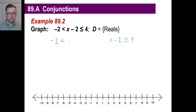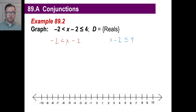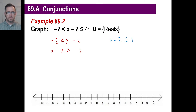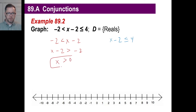So we've got negative 2 is less than x minus 2. Let's do the left side first. If you want to visualize this as having been flipped, you can look at it as x minus 2 is greater than negative 2. If you move this over, we have x is greater than 0. That's our first equation. We're allowed to use real numbers, so if x is greater than 0, it looks like this on the number line.